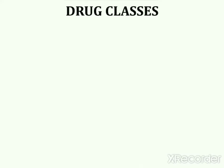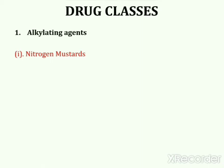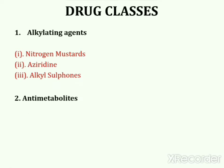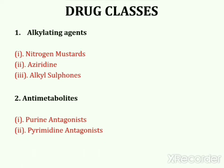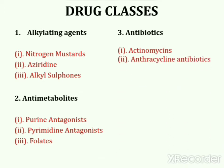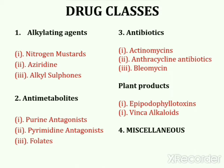The classification of antineoplastic agents includes several main categories, each further subdivided. The first main category is alkylating agents, with subcategories including nitrogen mustards, aziridine, and alkyl sulfonates. The second is antimetabolites, including purine antagonists, pyrimidine antagonists, and folates. The third is antibiotics and natural products, covering actinomycin, anthracycline antibiotics, bleomycin, epipodophyllotoxins, and vinca alkaloids. The last main category is miscellaneous compounds.